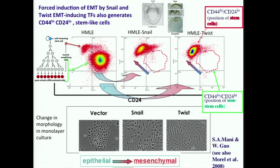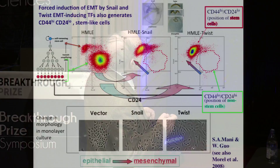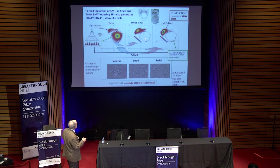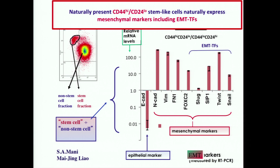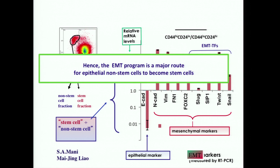Senda Raimani and Mai Jinglao in my laboratory asked: is there any connection between the EMT program and the stem cell program? What they found was when they took non-stem cells and forced them to go through an EMT, changing their morphology in monolayer culture, all of the non-stem cells migrated en masse from the non-stem cell into the stem cell position. This provided the initial indication that the EMT program is a very important route by which epithelial cells can enter into the stem cell state. Indeed, naturally present epithelial stem cells express a whole series of mesenchymal markers, indicative of the notion that the EMT program is an important route for normal epithelial cells and cancer cells to enter into the stem cell state.